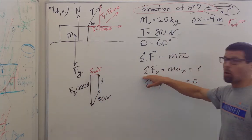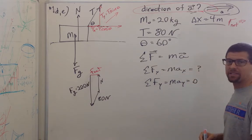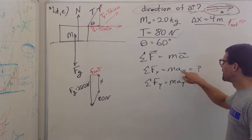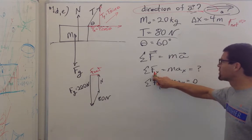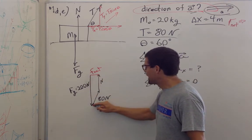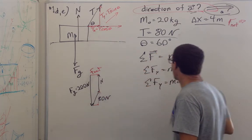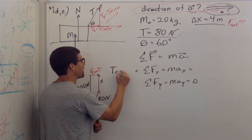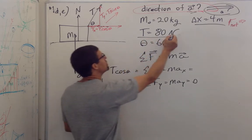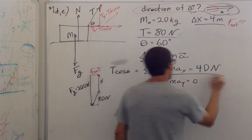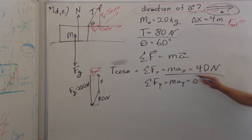Or I can do a component-by-component approach. The sum of the forces in the x direction equals mass times acceleration in x; the sum of the forces in the y direction equals mass times acceleration in y. The only force in the x direction is the x component of the tension: sum of forces in x equals tension cosine theta. Tension is 80 newtons, cosine of 60 degrees is one half, so this equals 40 newtons. The mass is 20 kilograms, so the acceleration in the x direction is 2 meters per second squared.